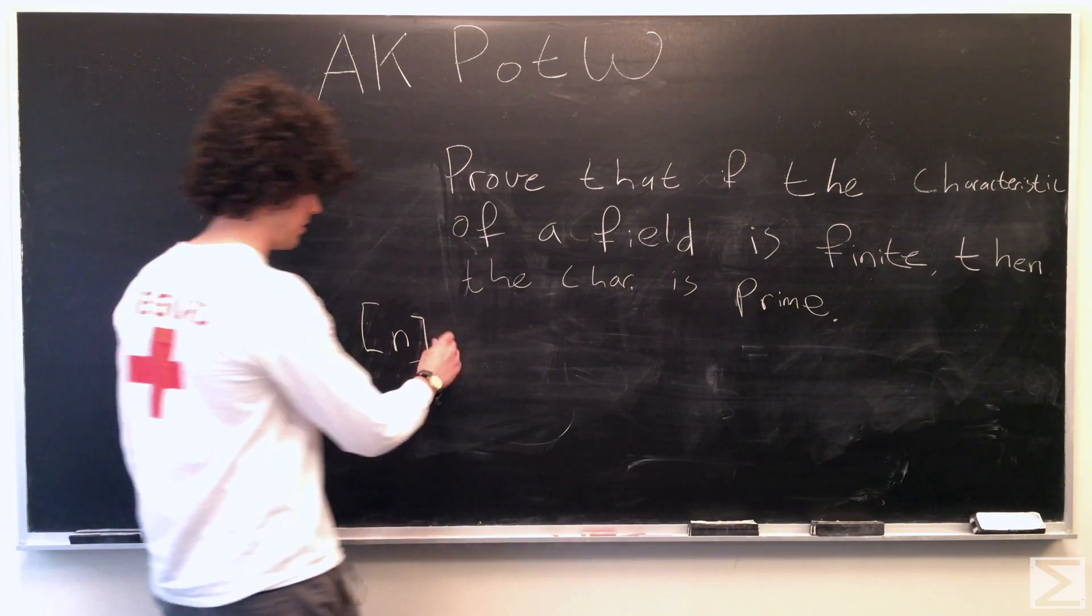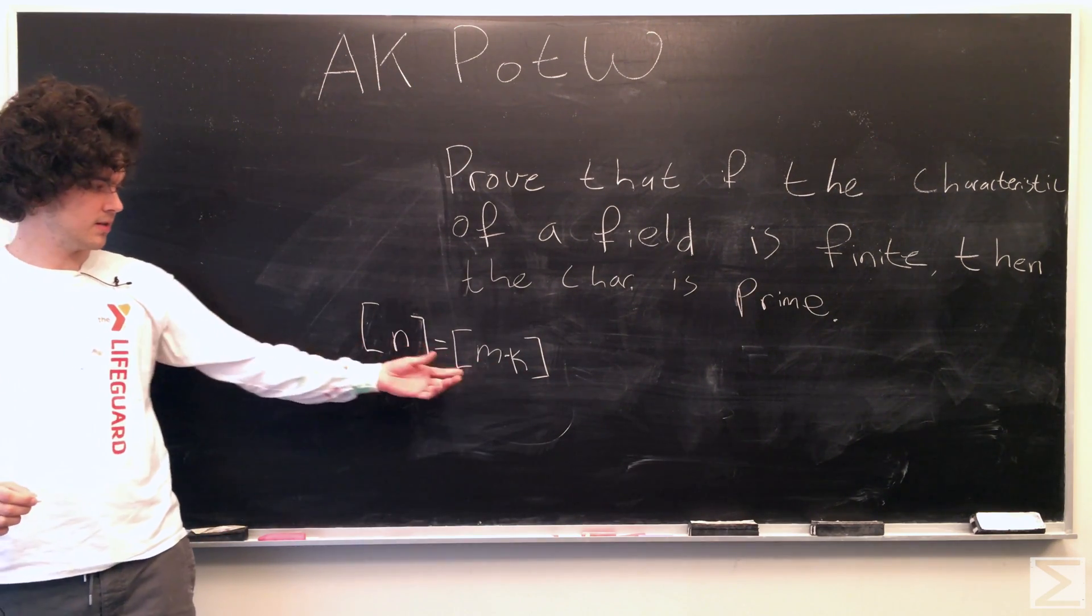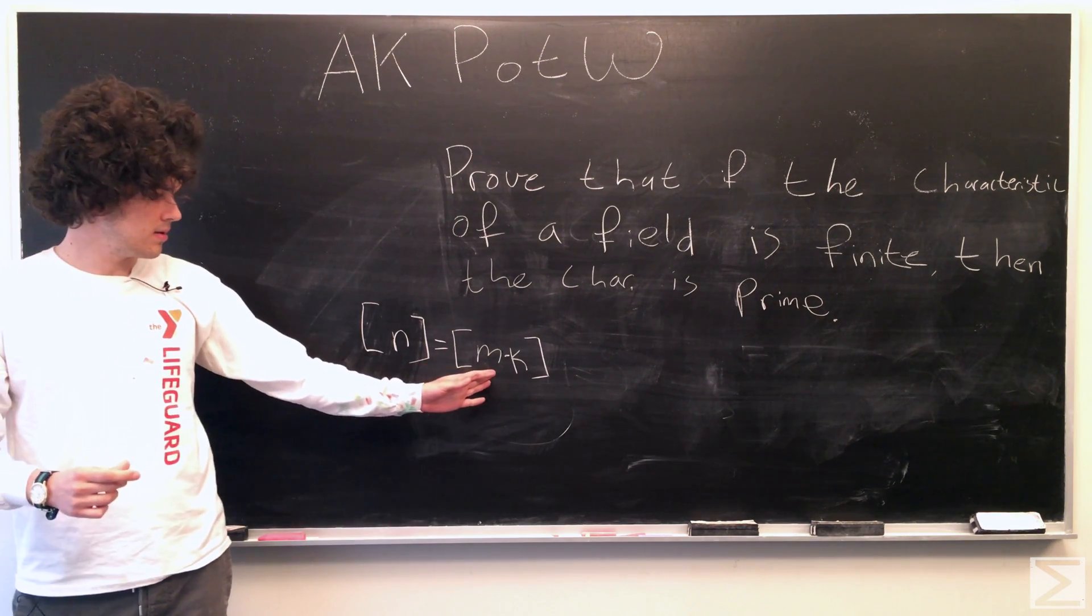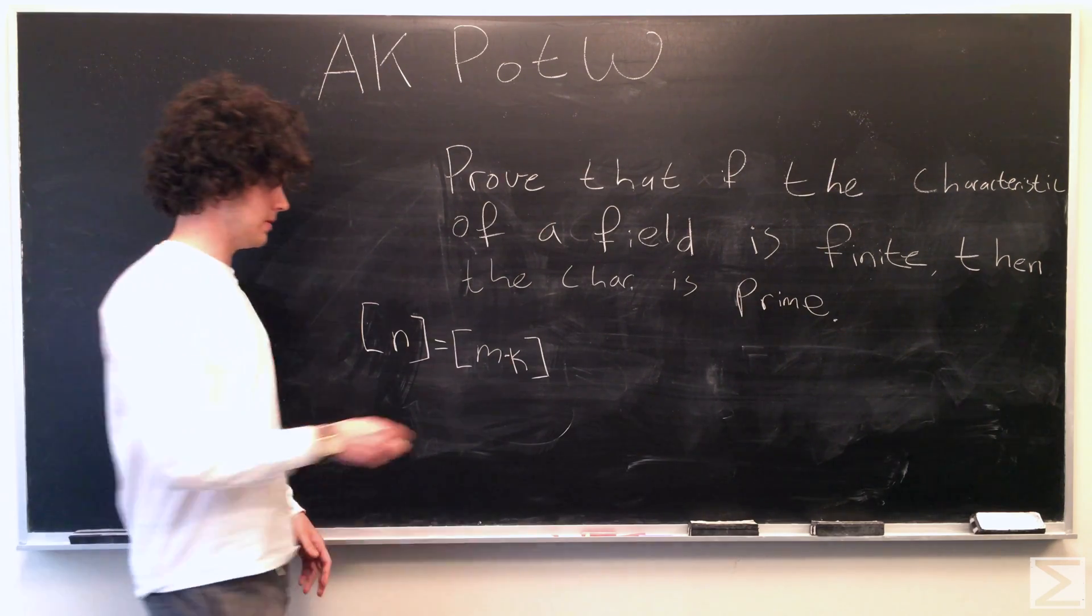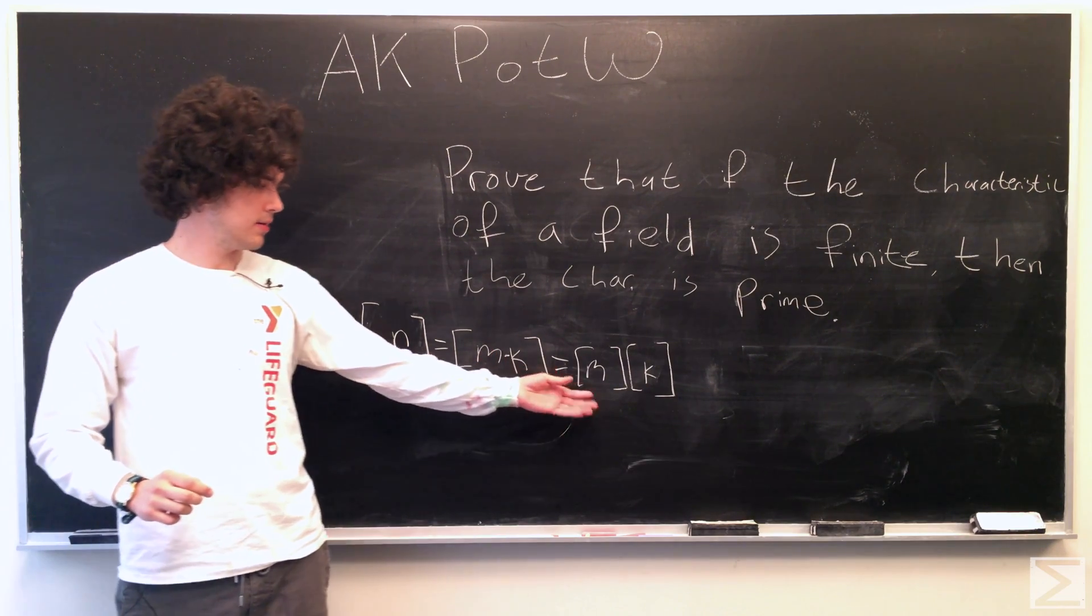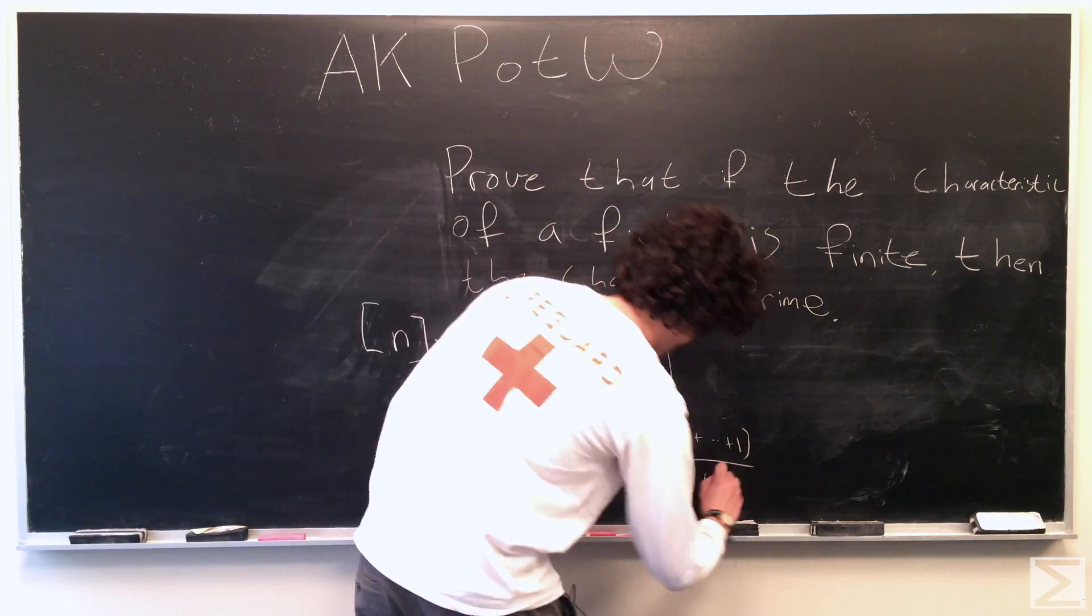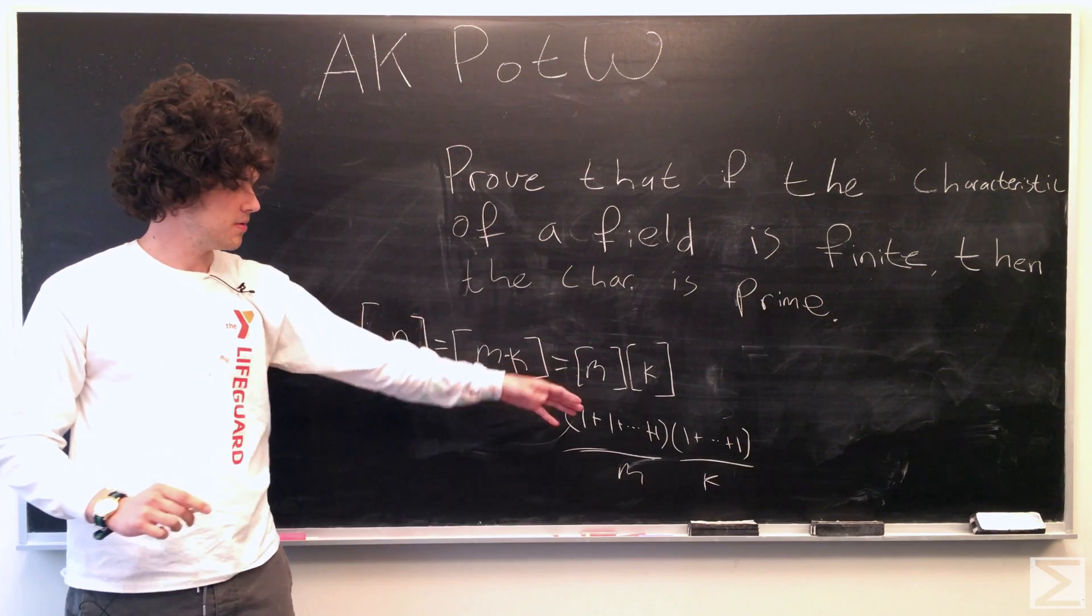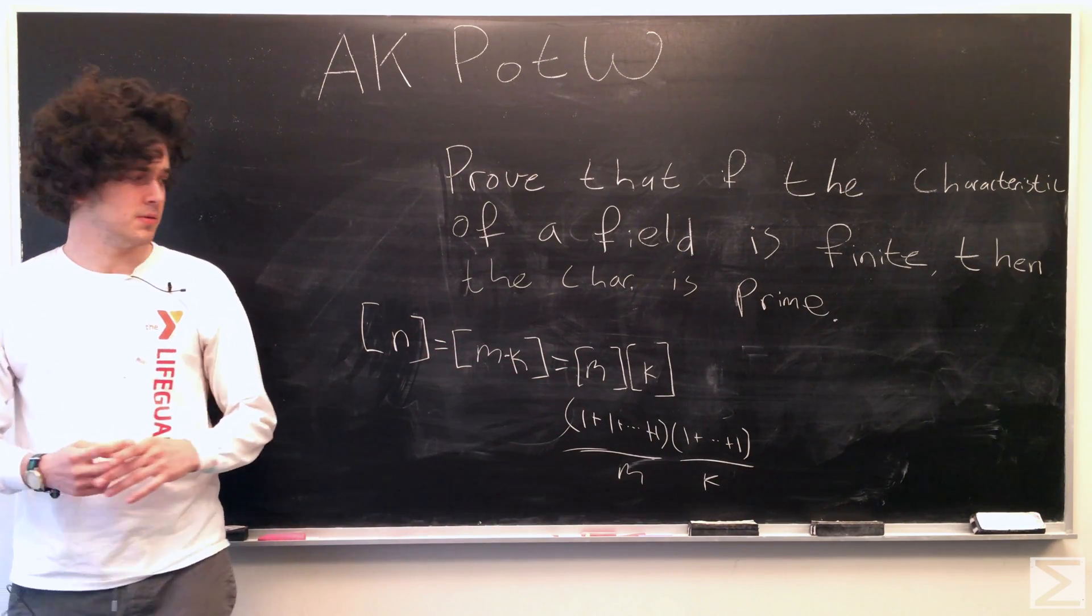And then we're going to assume that we can factor this into m and k. And because fields have the distributive property, we can say this is equal to characteristic m times characteristic k, where we have m ones here and k ones here, and of course we just distribute those to get m times k, and then we've assumed that's equal to n.